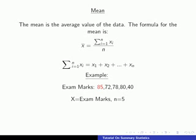Well x1 is 85, x2 is 72, x3 is 78, x4 is 80 and x5 is 40. So you're just adding up these five values and dividing by n which is 5. And our mean works out to be 71.